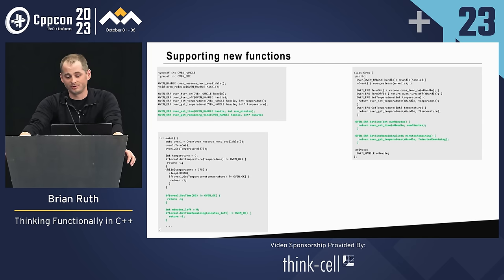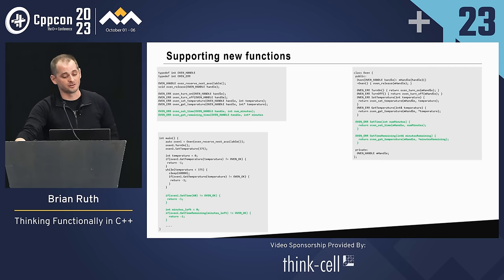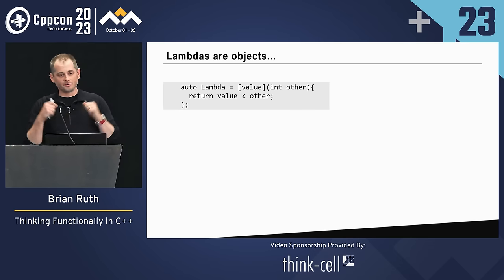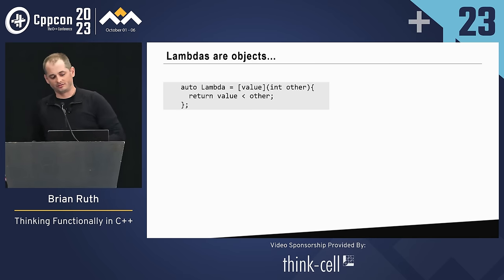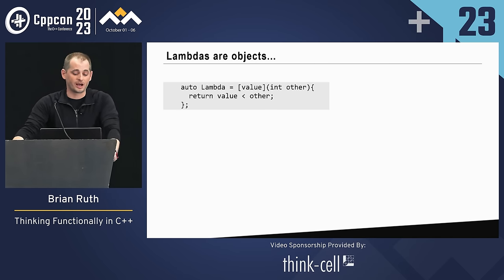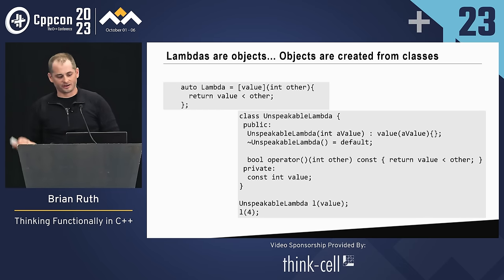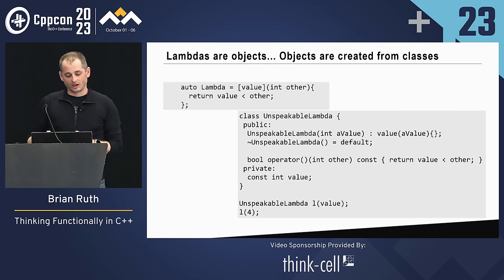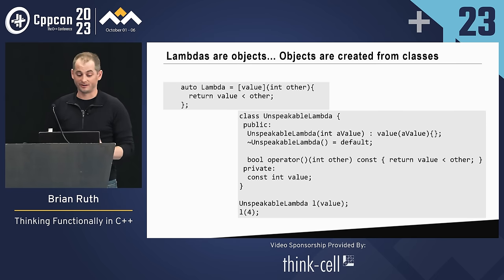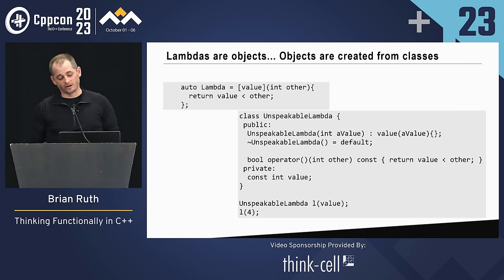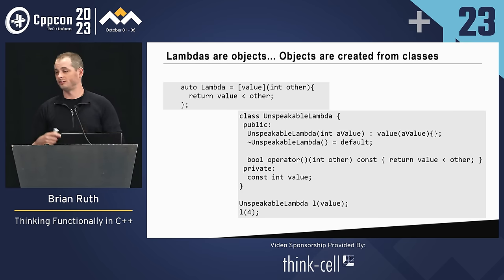What if we think about it a little differently? Lambdas are objects. Here we've got a lambda that captures a value, and it's going to return whether the captured value is less than the value you pass in. Under the covers, the lambda is really making an unnamed type — it's got a constructor that stores the value internally, you create an instance of it, and you can call it with a call operator overload. Let's take a look at our C API and say we have a lambda that takes a handle as its argument, and within that lambda we have another lambda that captures that handle inside itself.